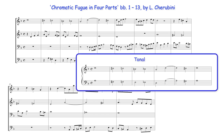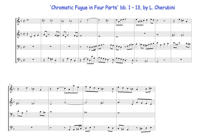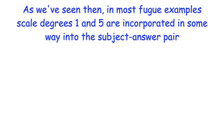In both his real and tonal subject options, however, scale degrees one and five of D minor respectively frame the subject and answer. As we've seen then, in most fugue examples, scale degrees 1 and 5 are incorporated in some way into the subject-answer pair.